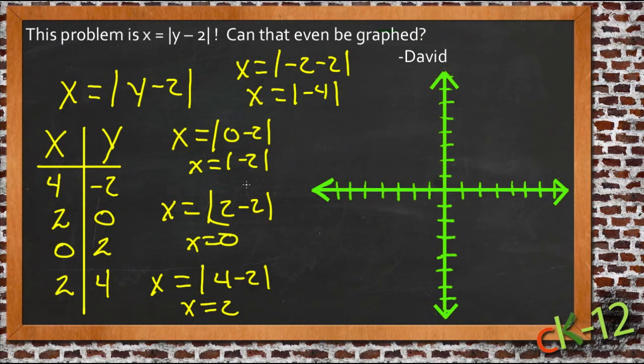So let's plot these points and see what we come up with. x is 4, y is negative 2, so we have a point right here. x is 2, y is 0, so there's a point right here. x is 0, y is 2, so just put it right there. And x is 2, y is 4, so there's a point up here.